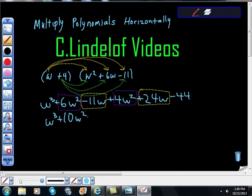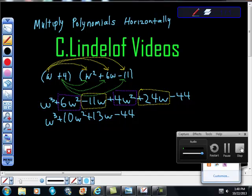And negative 11w plus 24w will give you 13w. And then you can bring down your minus 44. And you can hit the bell.